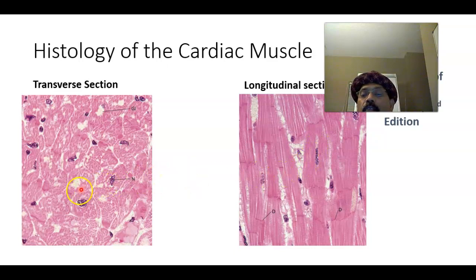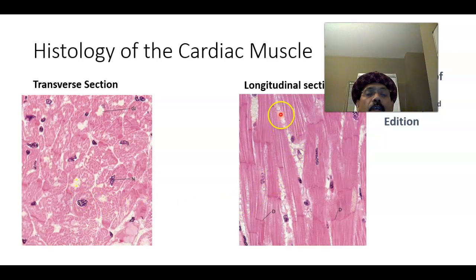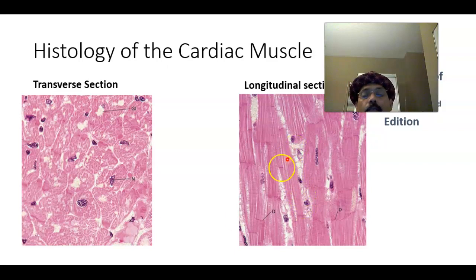This is the transverse section, where we can see the centrally located nucleus. The glycogen is close to the nucleus. Each muscle cell is surrounded by endomysium, and connective tissue between the muscle cells is rich in blood vessels and nerves.